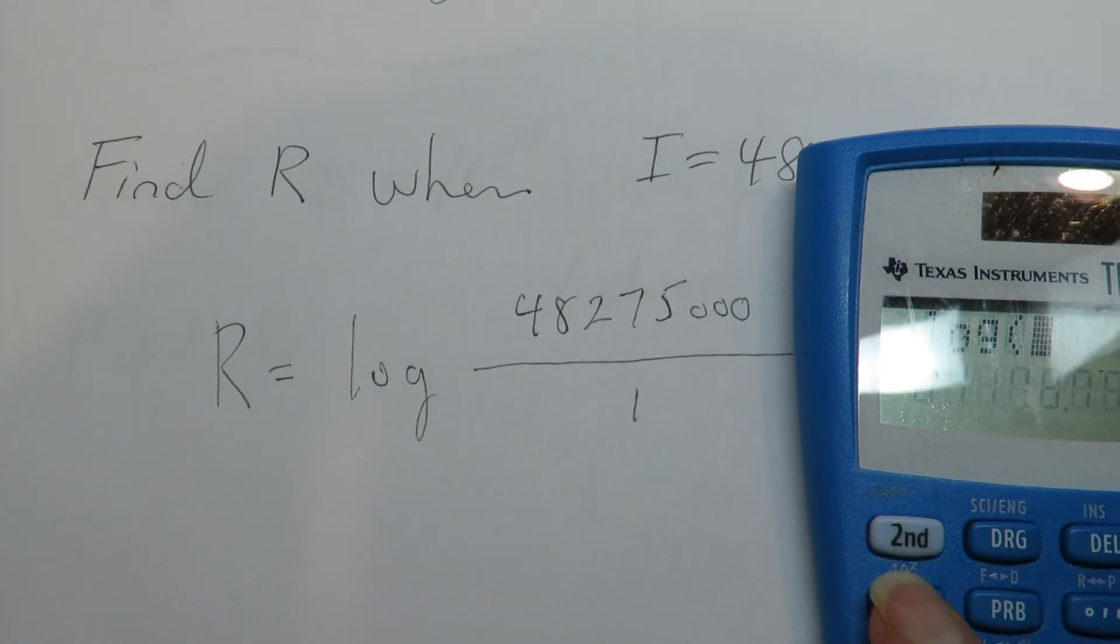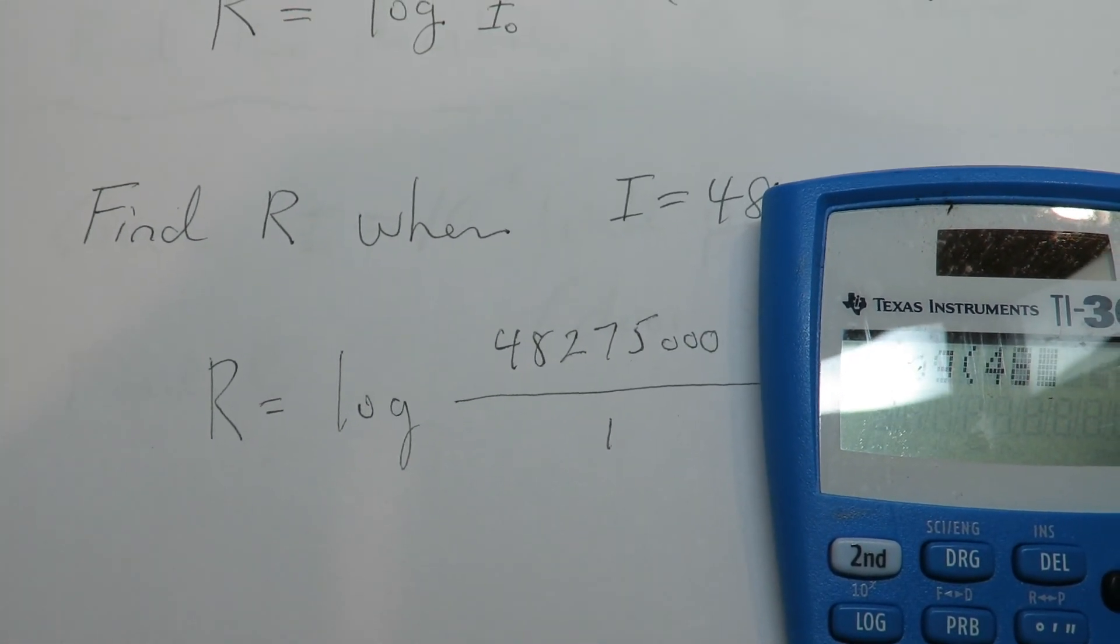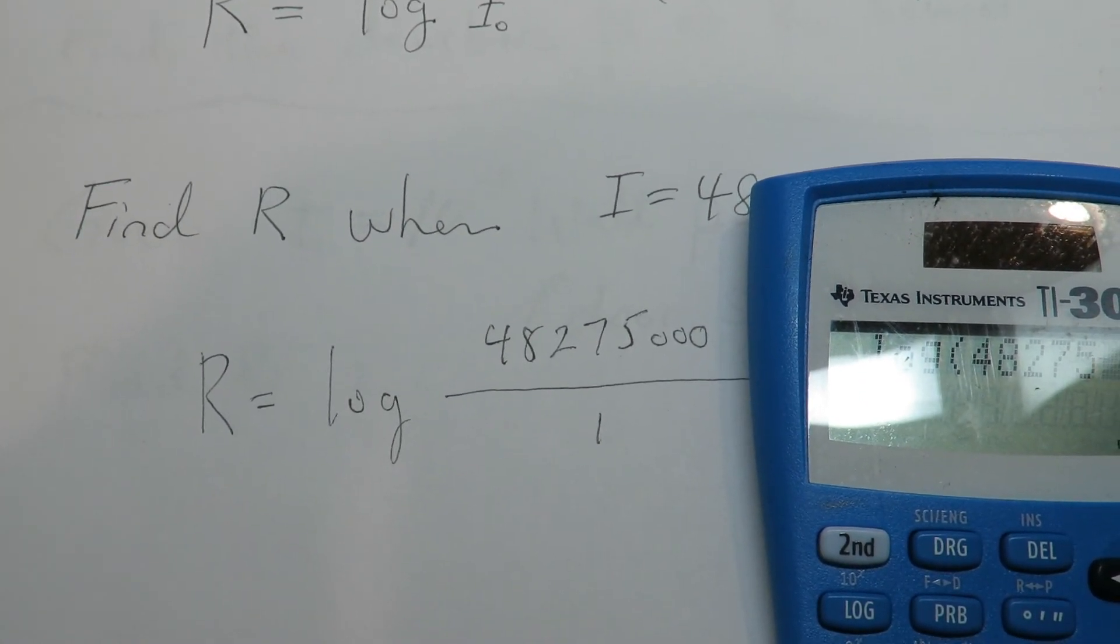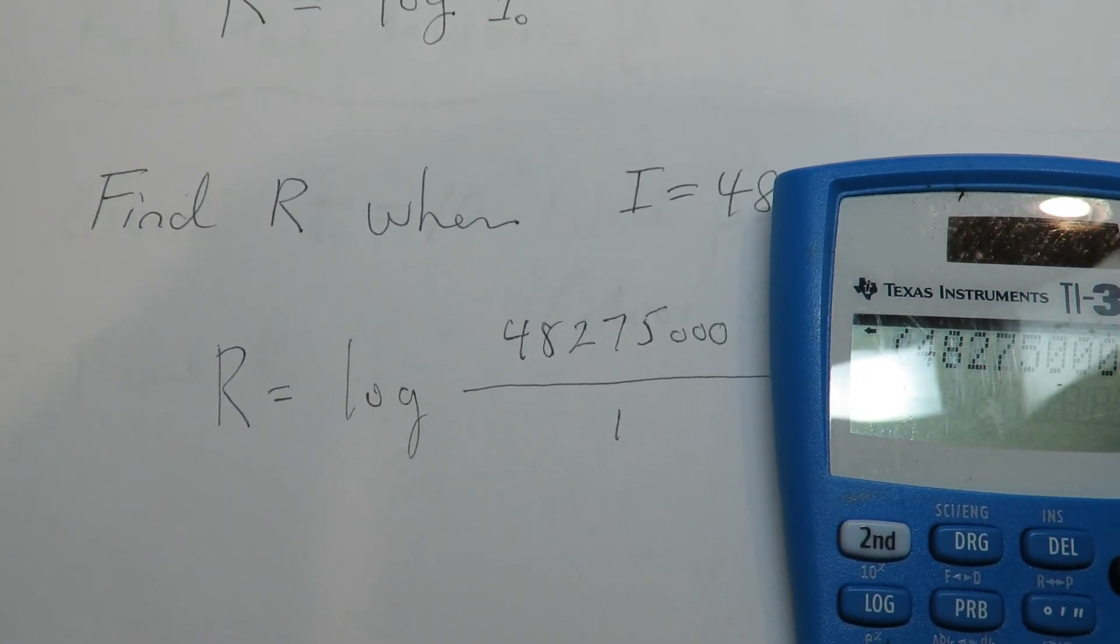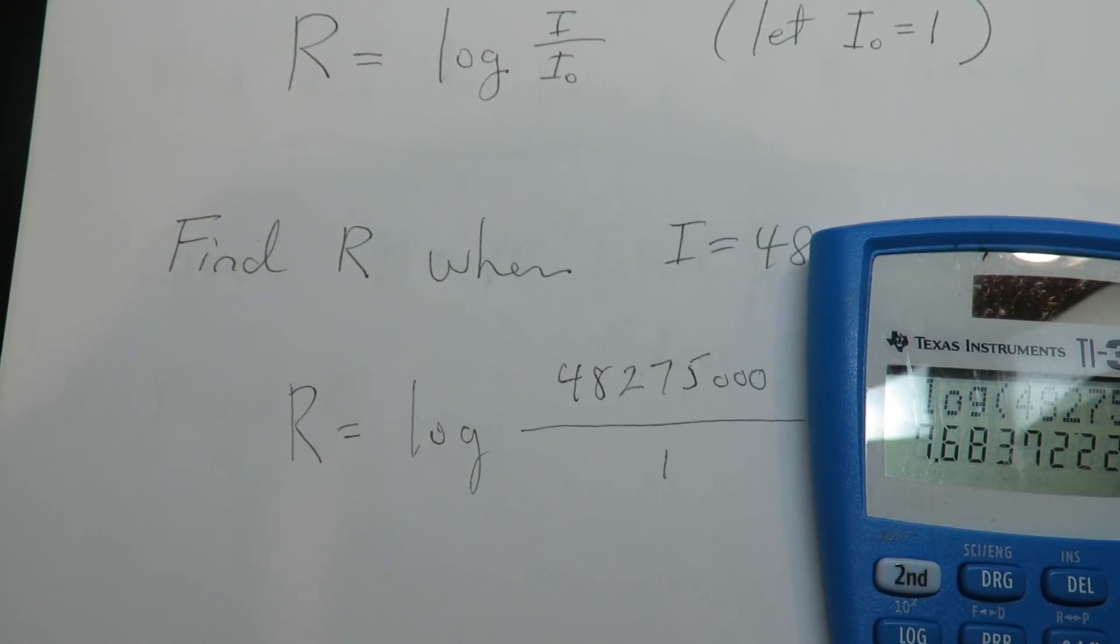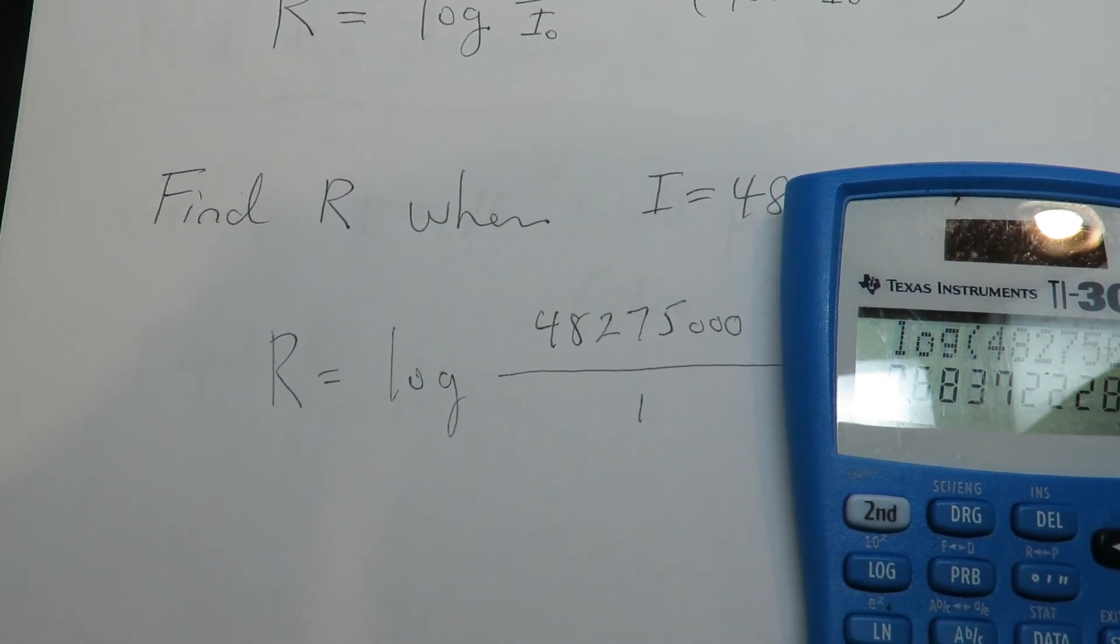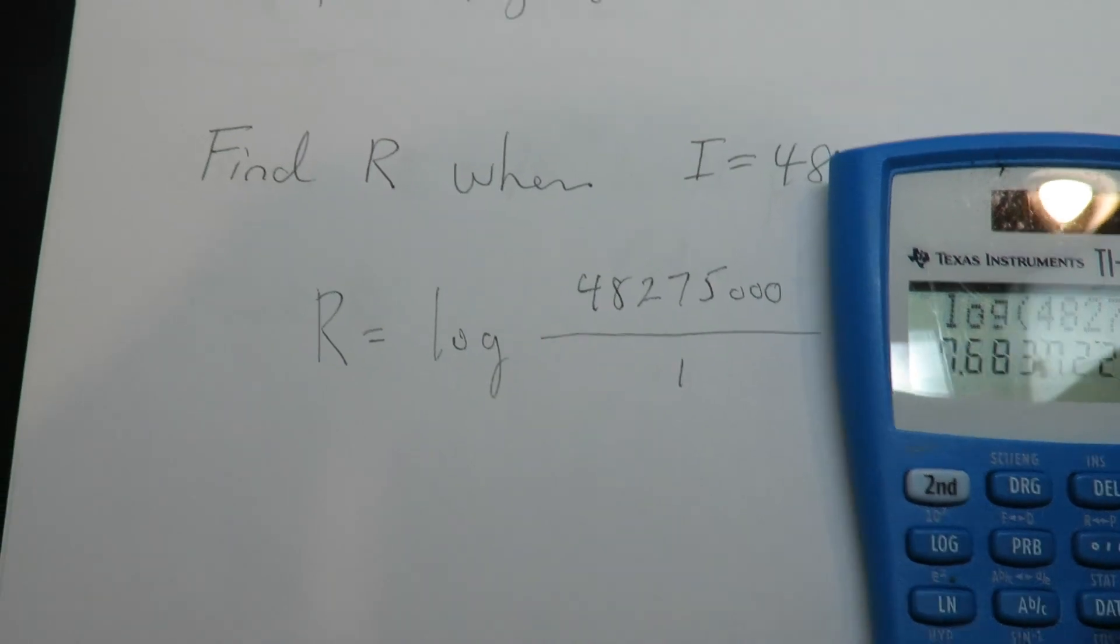So I'm going to hit log 48275123, then I'm going to hit equal and let's do two decimals on this. So 7.68.